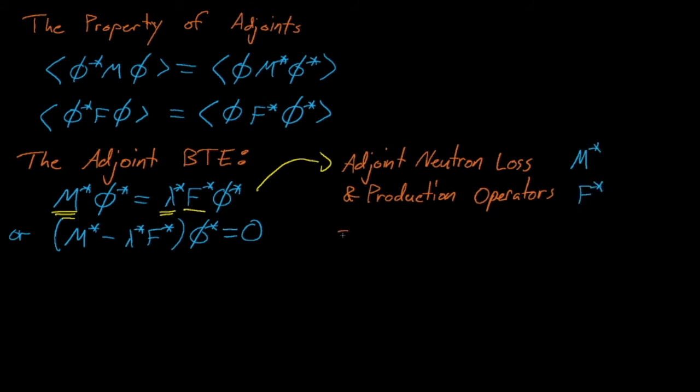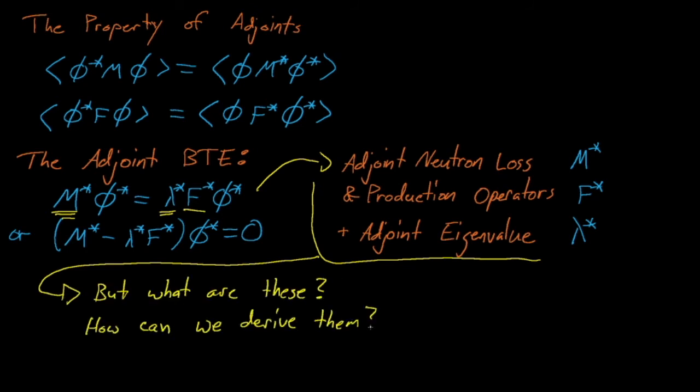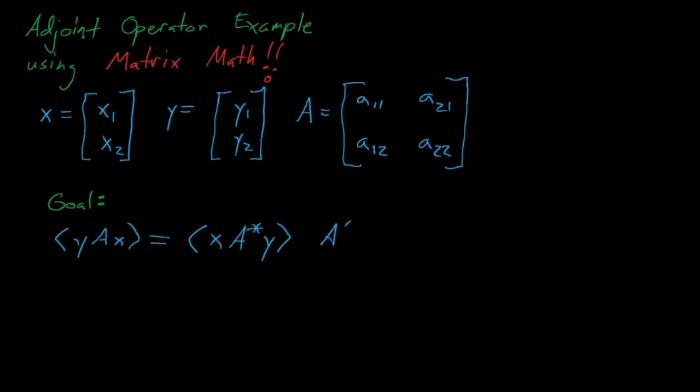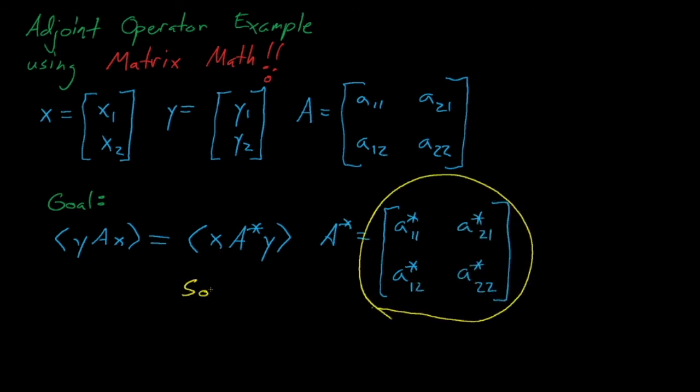Well, we'll actually derive M* and F* in the next lecture, but we'll prep for doing that by looking at a quick example that uses the dreaded matrix math. So for this problem, we'll consider some vector x, a vector y, and some matrix A. Now with the data in these vectors and in this matrix, we would like to develop an expression for A*, which is the adjoint version of A that satisfies the property of adjoints. So we want to be able to take the adjoint of A and switch the order of x and y in this inner product. Now we will demonstrate how to solve for the coefficients in A* for this quick example, and in this next lecture, we'll use the same exact approach to derive M* and F*.